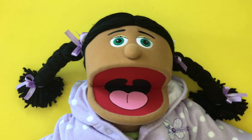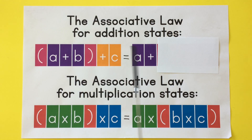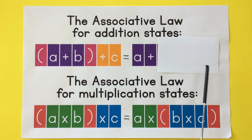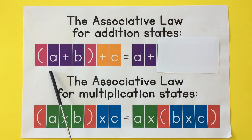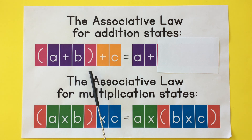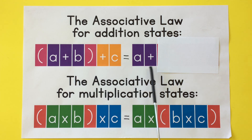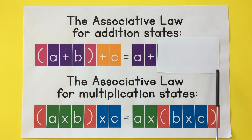Yay! Now we're going to cover a part of it and see if you can remember how to say it. The associative law for addition states: (A plus B) plus C equals A plus (B plus C).